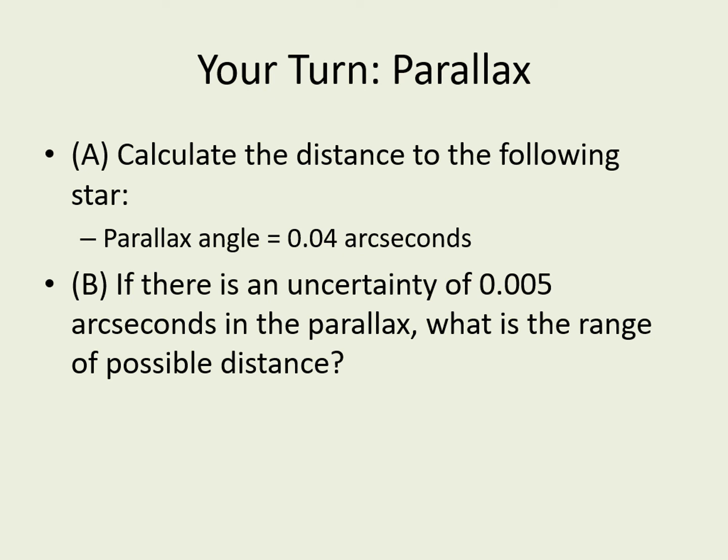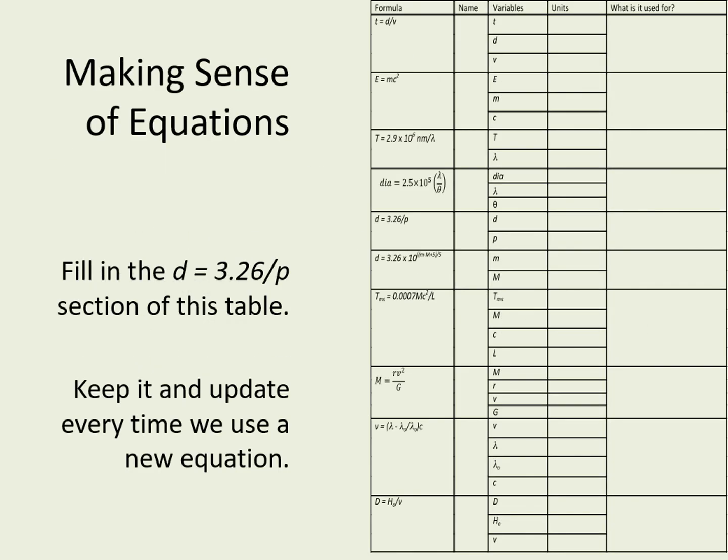Now it's your turn to try one of these calculations. If a star has a parallax of 0.04 arc seconds, how far away is it? If the uncertainty is 0.005 arc seconds, what's the possible range of distances? Remember this table — you should be using it to help you keep track of the equations we use in this course. Fill in the distance equals 3.26 over parallax section of this table now. Keep it and update every time we use a new equation. You'll find this page useful doing homework and reviewing for exams.